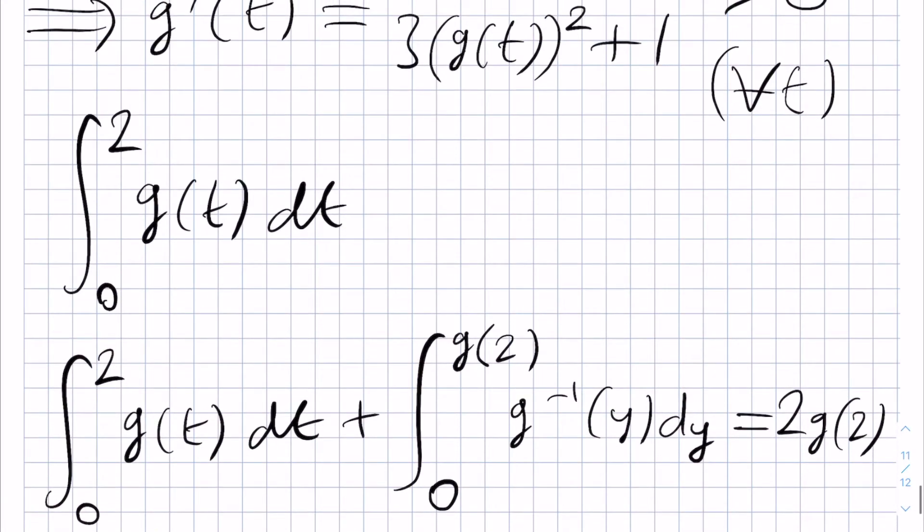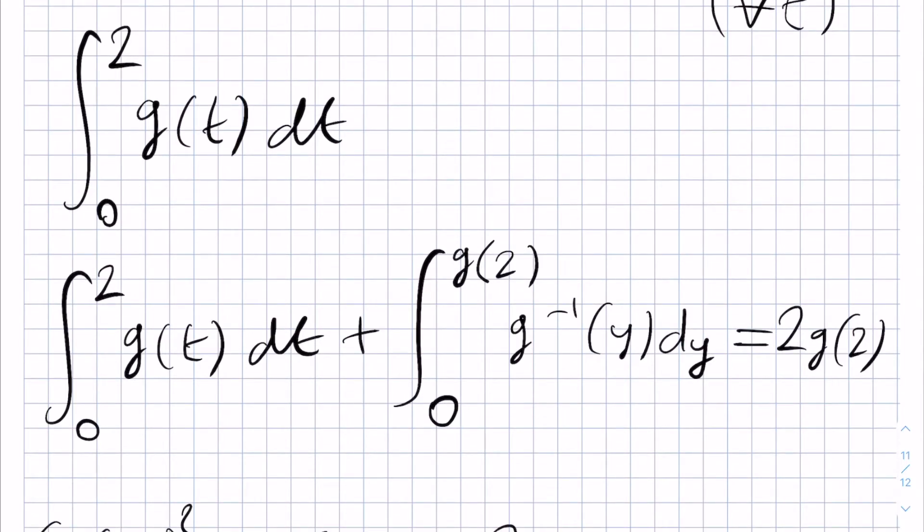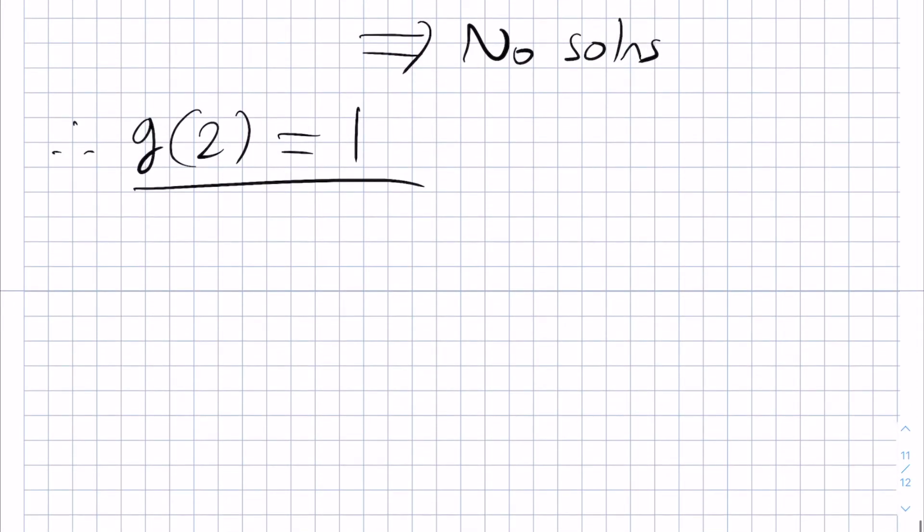Now that we've found g(2), we need to see how we can perform this integral here because if you want to have a chance at calculating this, then we now know this over here, but we do not know this. In particular, we can write y equals g(t) so that indeed t is g inverse of y as we did in part 1 of this question.